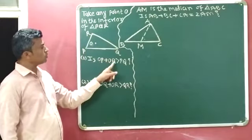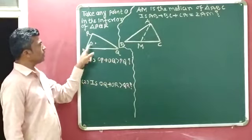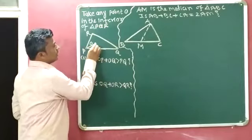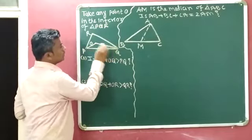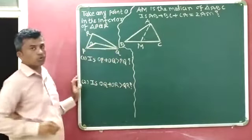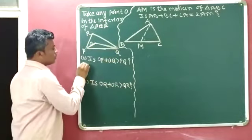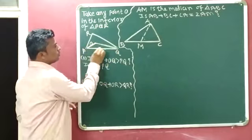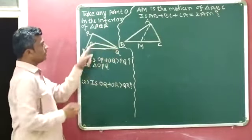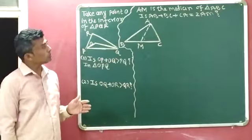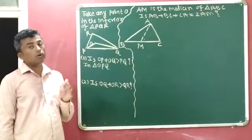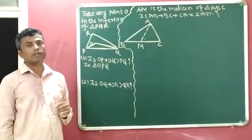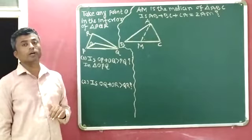Is OP plus OQ greater than PQ? We will first join OP and OQ. In triangle OPQ, according to the side length property of the triangle — the sum of the length of any two sides of a triangle is greater than the length of the third side.